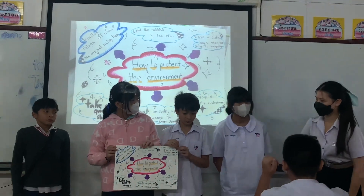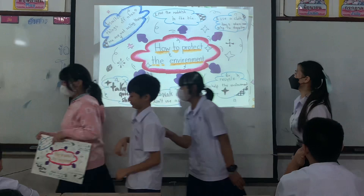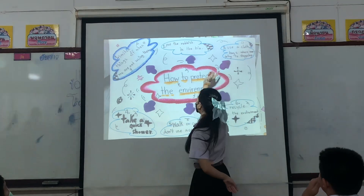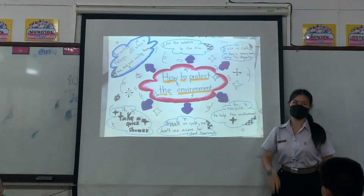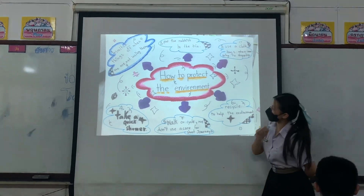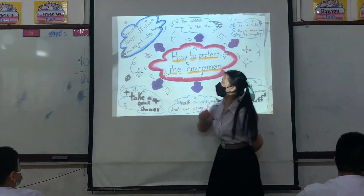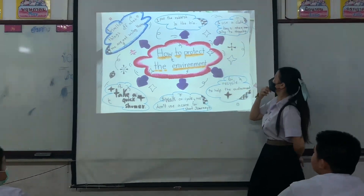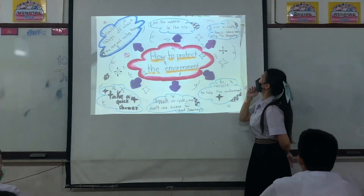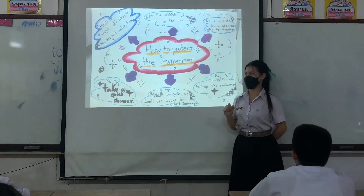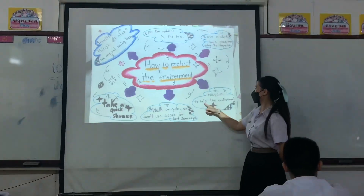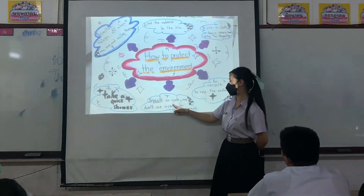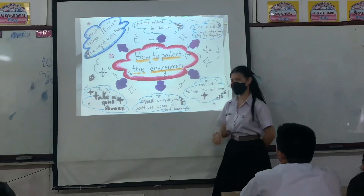Okay, thank you for this group. Back to your seats. For this group — they have six topics about the environment. First: switch things off when we are not using them. Next: put the rubbish in the bin. Next: use a cloth bag when going shopping. Next: recycle to help the environment — that's a good idea. And next: walk or cycle; don't use a car for short distances.